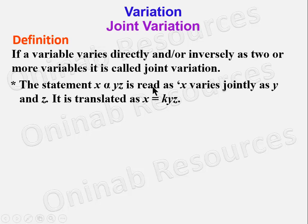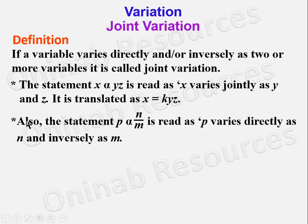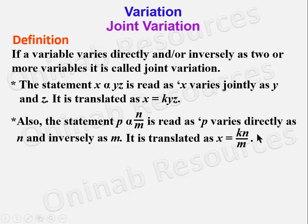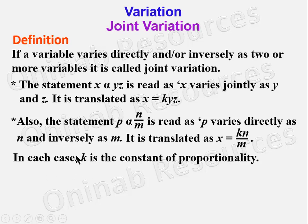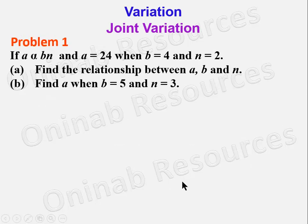The statement x ∝ yz is read as 'x varies jointly as y and z' and is translated as x = kyz. Also, the statement p ∝ n/m is read as 'p varies directly as n and inversely as m,' translated as x = kn/m. In each case, k is the constant of proportionality.